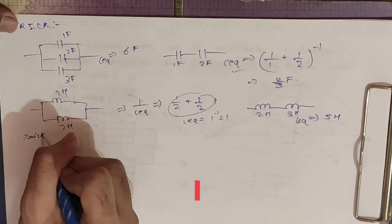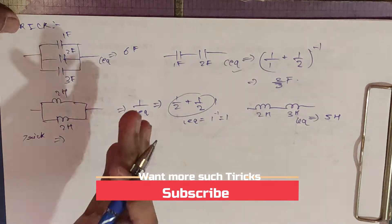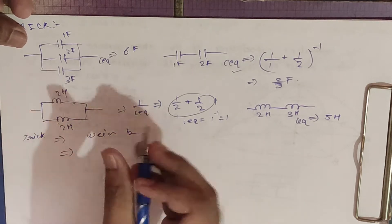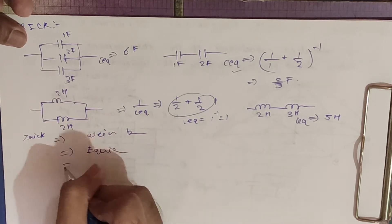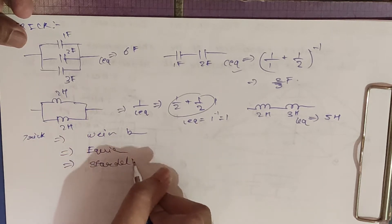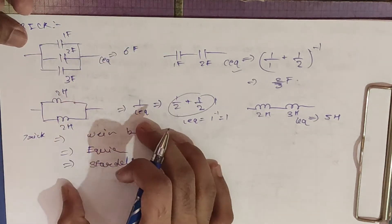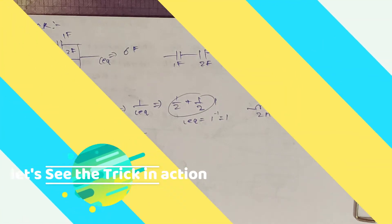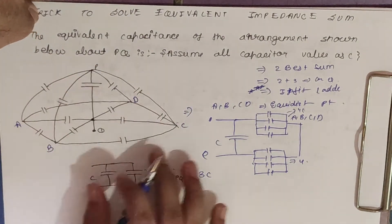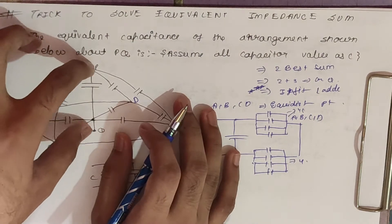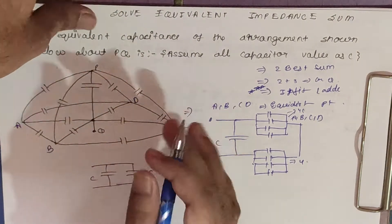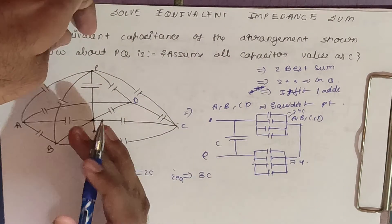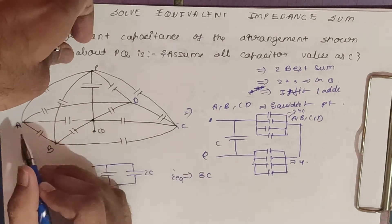The trick we use follows the same approach as for equivalent resistance: first check for a Wheatstone bridge (wind bridge), then check for equidistant points, then apply star-delta if needed. Let's apply this trick to the first sum.